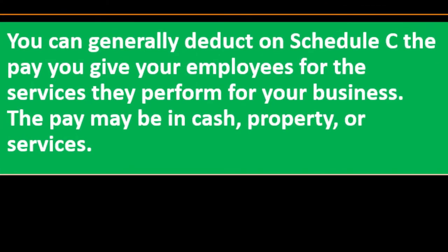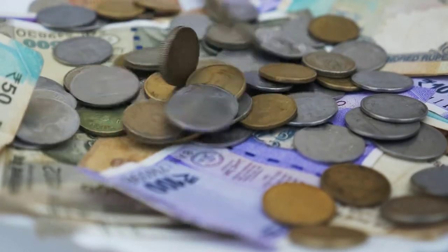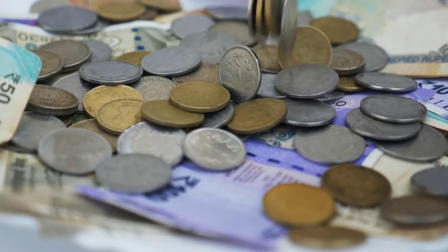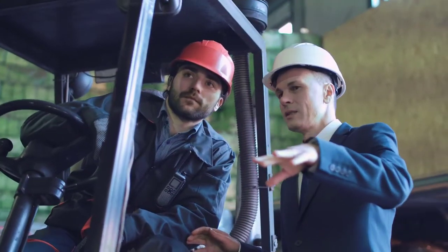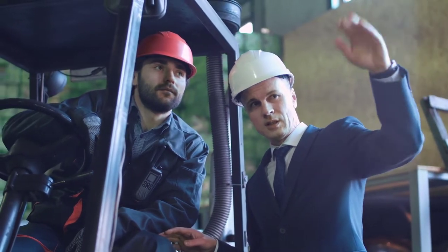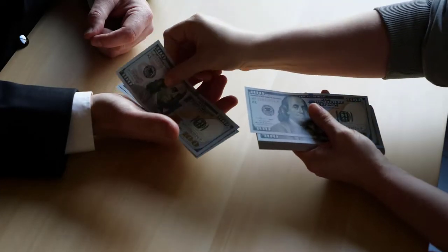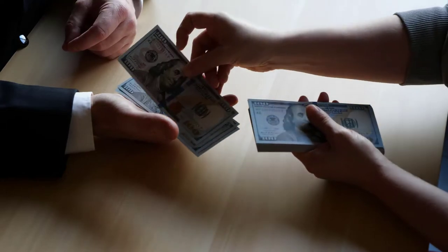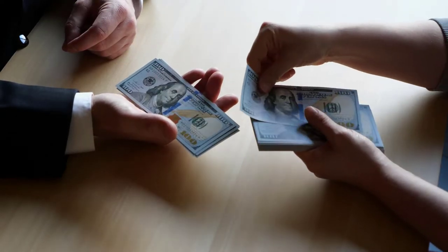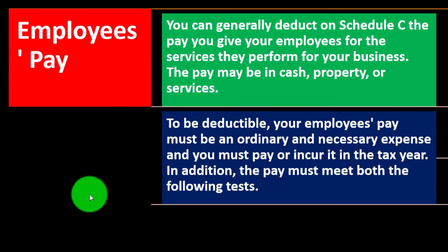You can generally deduct on Schedule C the pay you give to your employees for the services they perform for your business. The pay may be in cash, property, or services. It would be as simple as any other expense if not for all the regulations involved. If you just agreed to pay someone at the end of the day for work done, you'd simply record an employee expense offset by cash. But there's more complexity — you have to have W-2s in place, withholdings, social security, medicare, payroll taxes, and other human resources bookkeeping requirements.